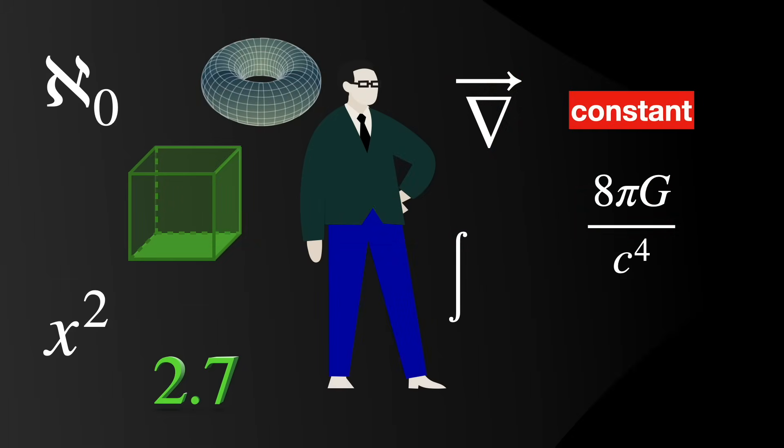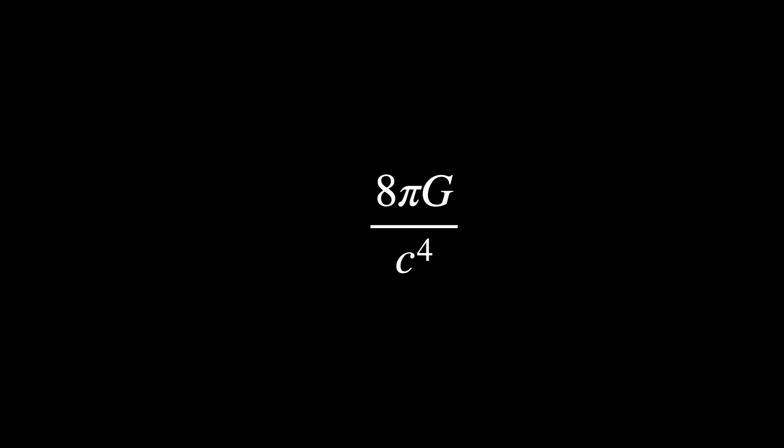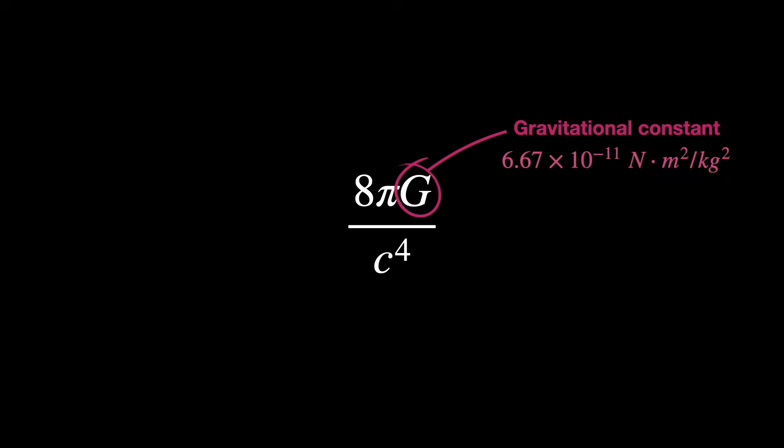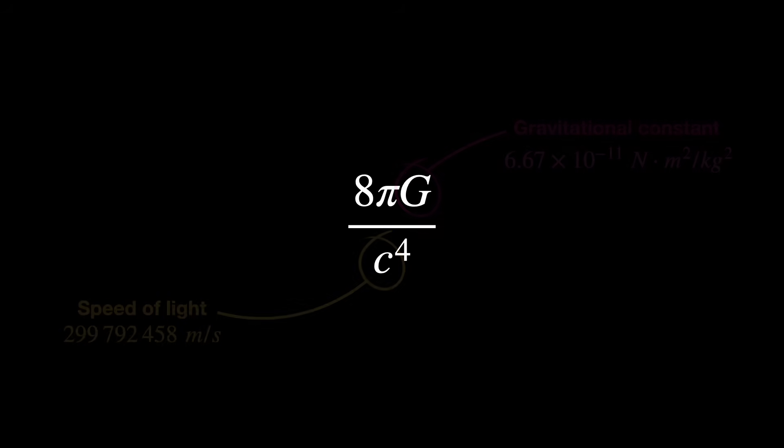He's not interested in the fact that it involves two of the most fundamental quantities in nature. In other words, the gravitational constant G and the speed of light C. So the mathematician sees it as nothing but a scaling factor that might as well be called kappa, for example.